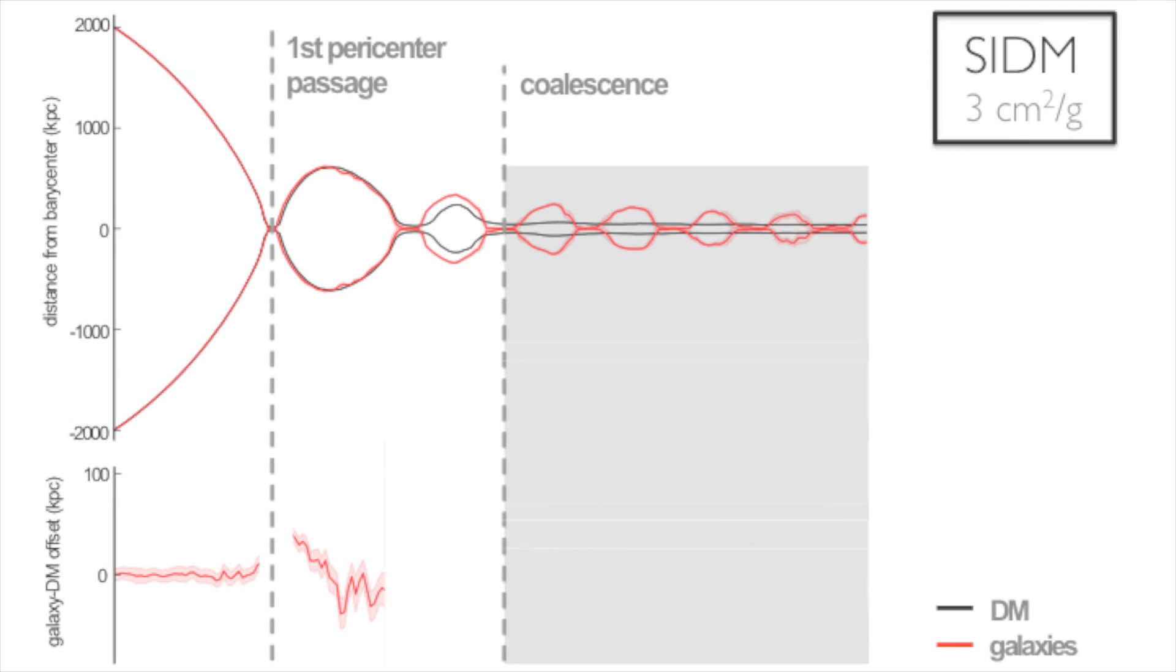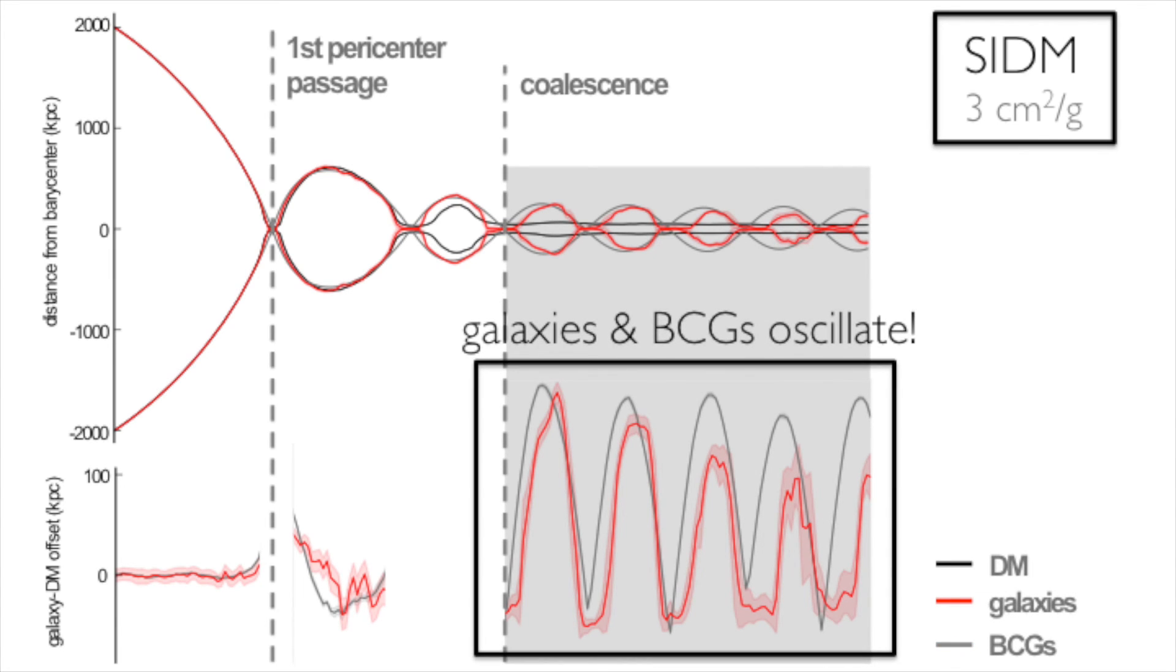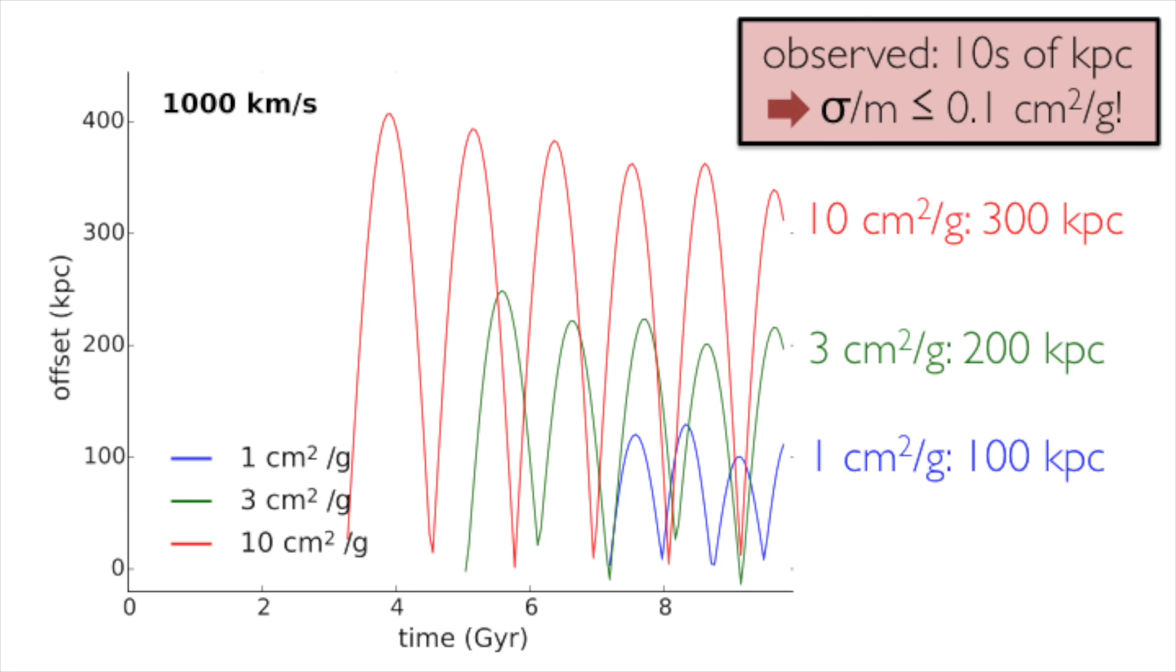However, we have found that more promising constraints may lie elsewhere. We have found that after the dark matter halos coalesce, the brightest central galaxies, or BCGs, oscillate within the newly formed core on orbits that do not decay, even after the newly coalesced cluster relaxes. For a cross-section of 1 cm² per gram, BCGs are expected to oscillate up to 100 kiloparsecs from the center of the merged remnant. If BCG miscentering also occurs in unequal mass mergers and is robust to the addition of gas physics and full merger histories, the lack of large miscentering observed in relaxed clusters implies a cross-section of 0.1 cm² per gram, the tightest constraint yet.